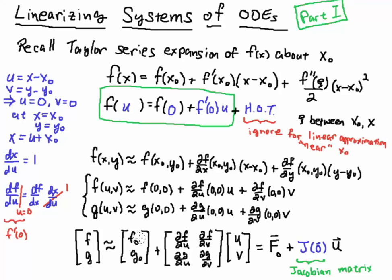Generally, you'll see something like this written as, this is going to be a vector f₀. This would be the Jacobian matrix. And this would be some vector u, with the arrow over the top to indicate that it's a vector, not the component u.